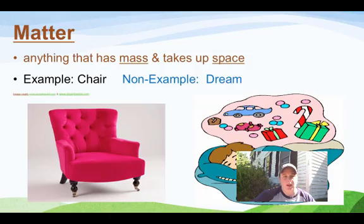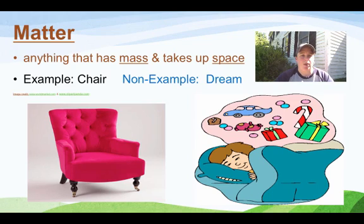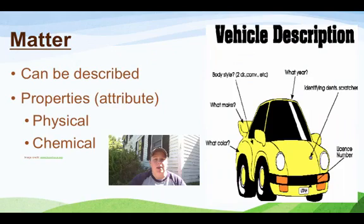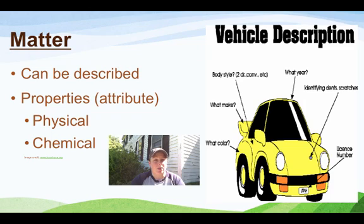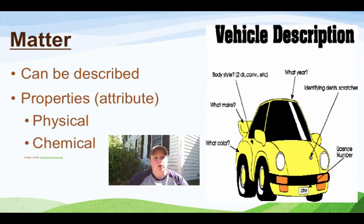So let's just remind ourselves: matter is anything that has mass and takes up space. An example is a chair, and a non-example would be a dream, an idea, or friendship. Talking about matter, especially in chemistry, you're talking about how it can be described, because that's going to allow you to do things with it based on its properties. Another word for property is an attribute — characteristic might be another good word. Now matter comes with two different kinds of properties: physical and chemical. Physical is what we are going to focus on today, specifically physical properties of solids.